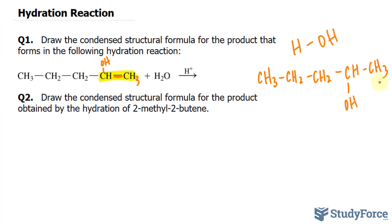Moving on to question two, draw the condensed structural formula for the product obtained by the hydration of 2-methyl-2-butene. Butene is a four-carbon chain, so we have four carbons, and the double bond happens on the second carbon.